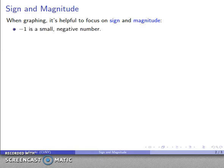For example, let's take negative 1. Well, this is a small number. Relatively speaking, it's a small number, but it's also negative. So negative 1 is a small negative number.